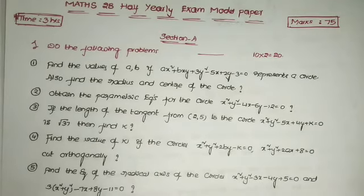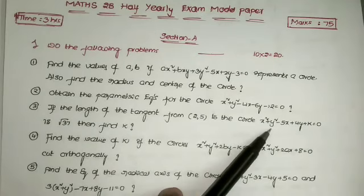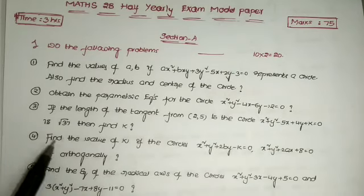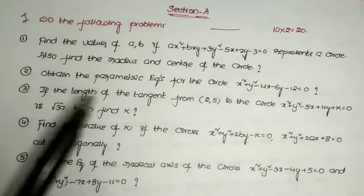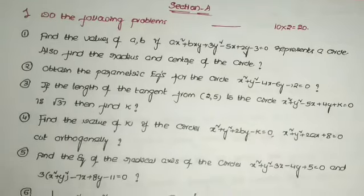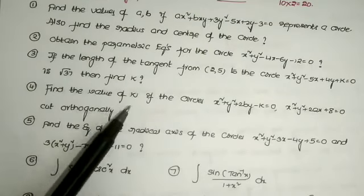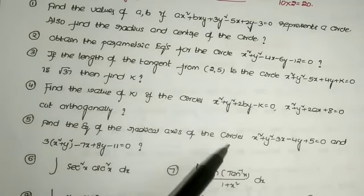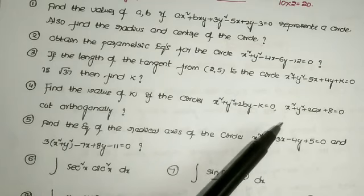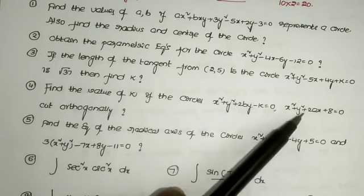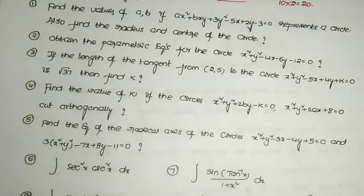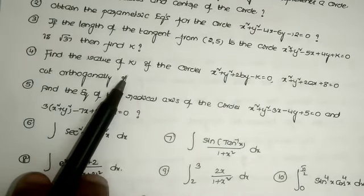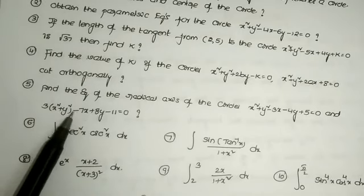Next question: if the length of the tangent from (2, 5) to the circle x² + y² − 5x + 4y + k = 0 is √37, then find the value of k. This is a two-mark question from the topic circles. Next: find the value of k if the circles x² + y² + 2py − k = 0 and x² + y² + 2ax + 8 = 0 cut orthogonally. This is a two-mark question from the topic system of circles.